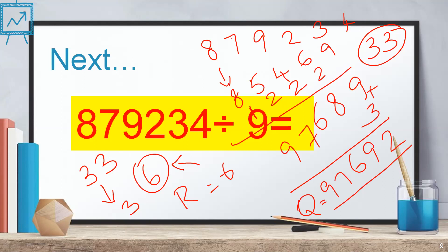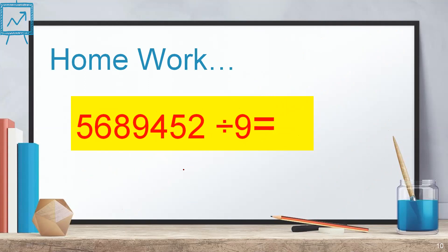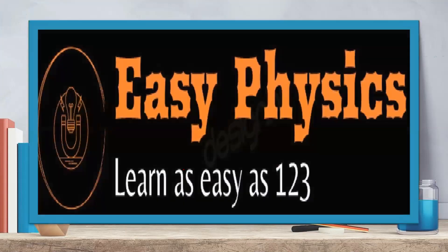Please take some bigger numbers and do self-practice. Check your answers with a calculator to see if you are getting them correct. Do more numbers and increase your speed. Then come back to the homework question, find the quotient and remainder, and if you can do it in three seconds or less, please comment your answers. Gain confidence and increase your speed. Thank you for watching — have a great day ahead!